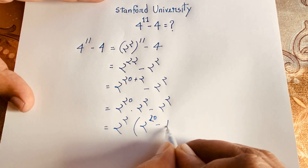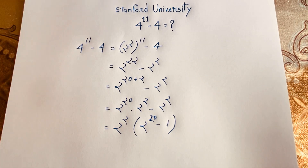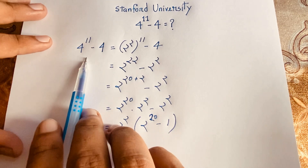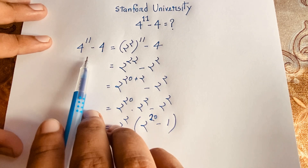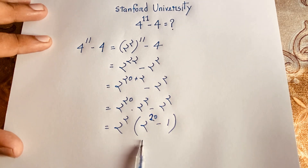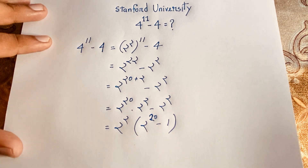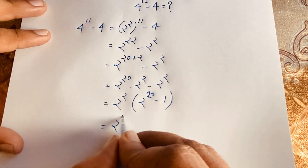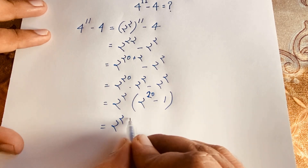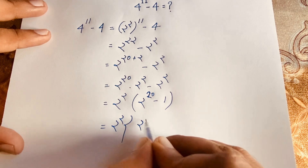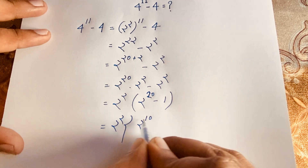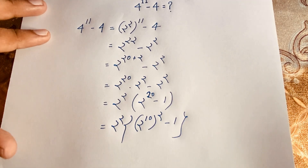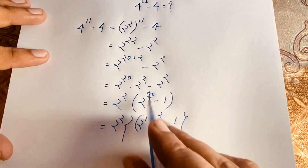Now, 2 to the power 2 is 4, so we have 4 as the common factor. And 2 to the power 20 can be written as 2 to the power 10, whole to the power 2, because 2 times 10 equals 20. So our expression becomes 4 times the quantity 2 to the power 10, whole squared, minus 1 squared.